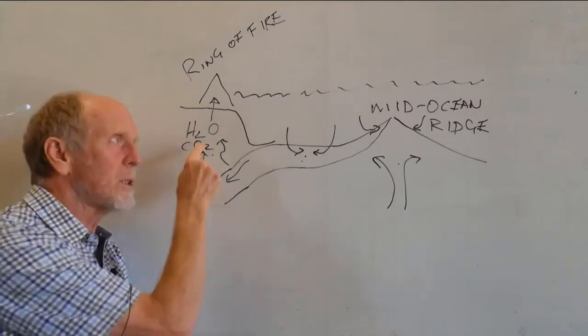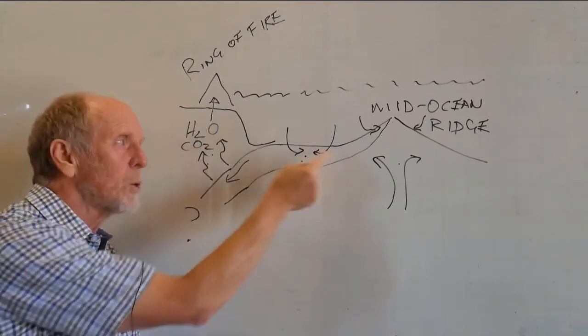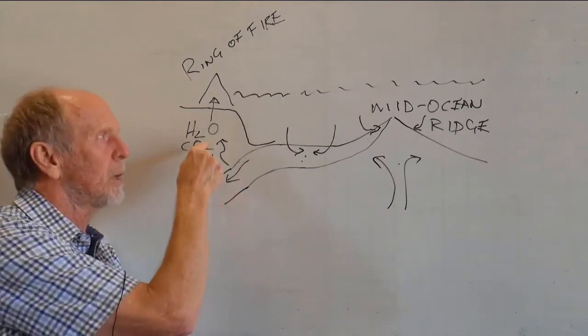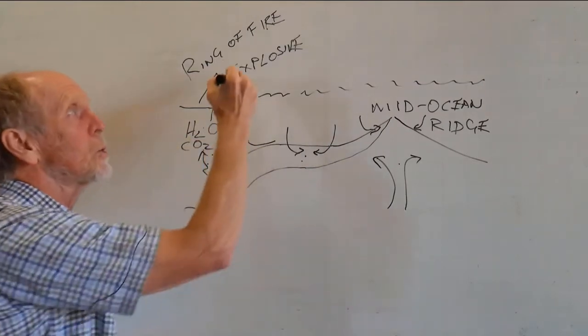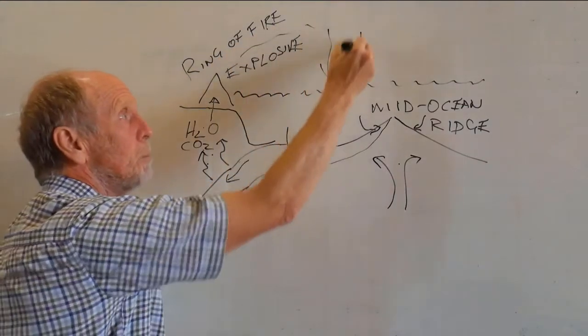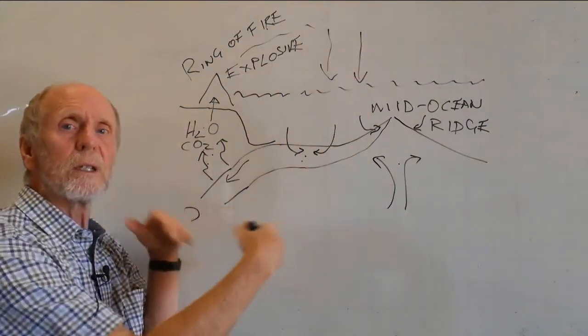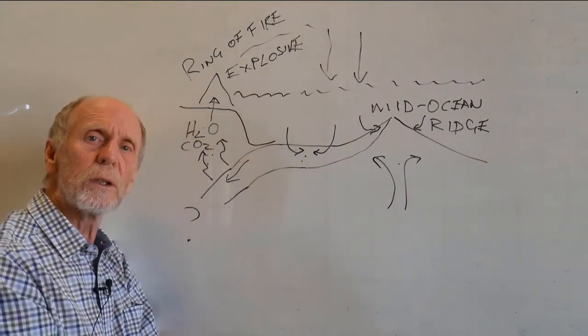You take that magma to the Earth's surface. The gases that are dissolved in the magma, which ultimately come from the oceans, get released when you depressurize the magma, and of course those gases go up in the atmosphere and come back down again. But what I've described for you here is the grand cycle of volatiles on the Earth.